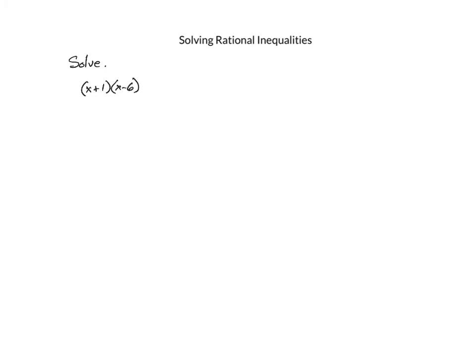Let's solve the next inequality: x plus 1 times x minus 6, over 4 minus x, is less than or equal to 0. Notice we already have 0 on one side, and the numerator is already factored while the denominator is prime. The critical values are negative 1 and 6 from the numerator, and 4 from the denominator.